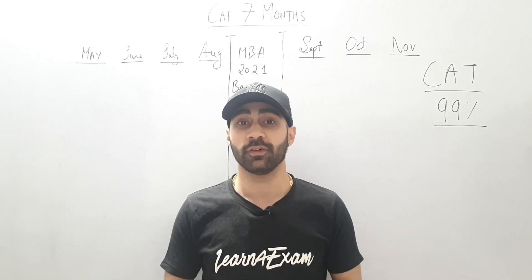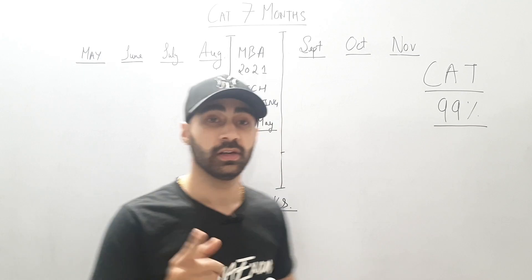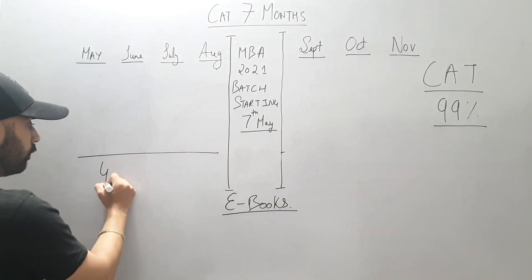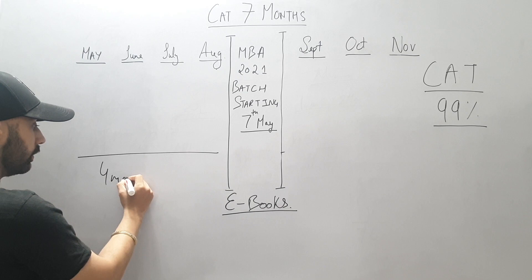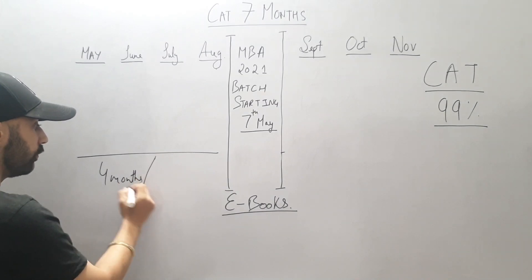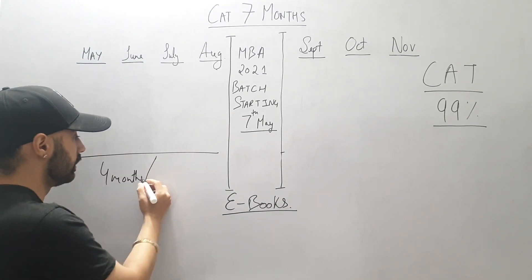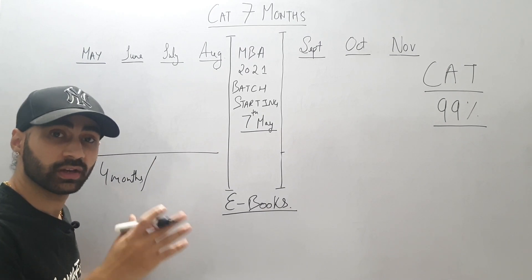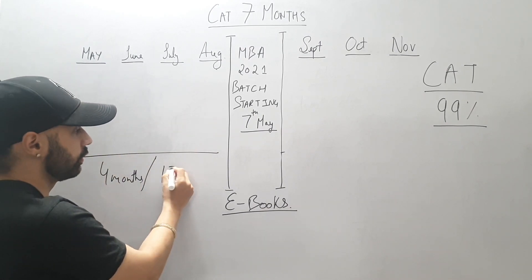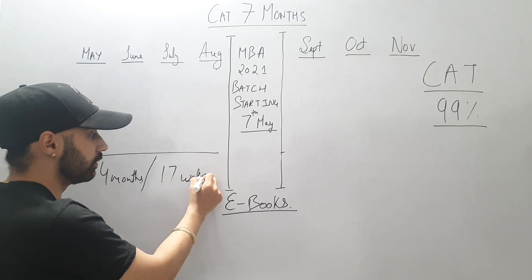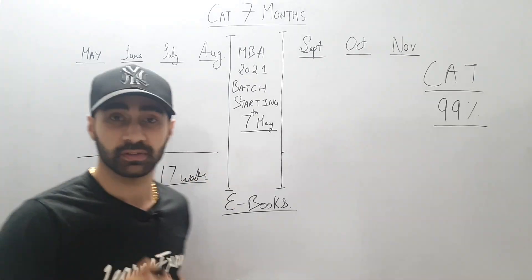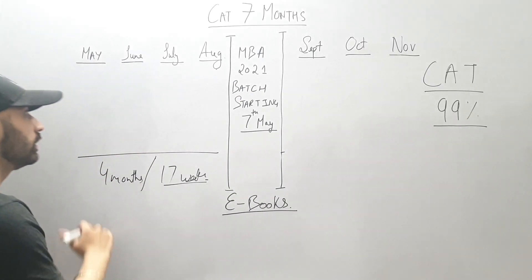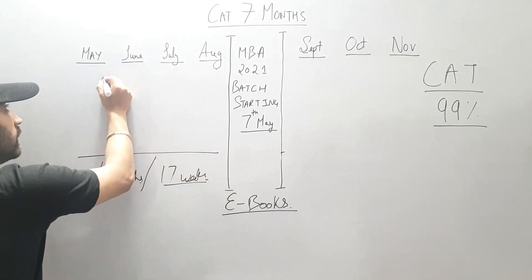The first target is to complete the syllabus in 4 months. In these 4 months, if you see how many weeks you get — one month has 4 weeks, so 4 into 4 is 16, plus some extra days, which gives you roughly 17 weeks. So you have about 17 weeks available.